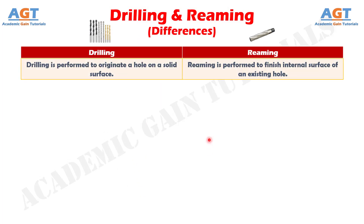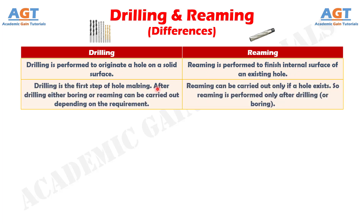Difference number one: drilling is performed to originate a hole on a solid surface, whereas reaming is performed to finish the internal surface of an existing hole. Number two: drilling is the first step of hole making. After drilling, either boring or reaming can be carried out depending on the requirement, whereas reaming can be carried out only if a hole exists — so reaming is performed only after drilling or boring.